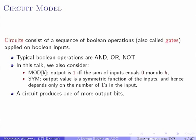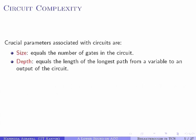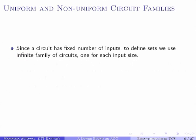The circuit produces some output bits which is the output of the circuit. We have the notion of circuit complexity, determined by certain parameters. The most important is size, which is the number of gates. The second is depth, which is the length of the largest path from an input to an output. The circuit complexity of a Boolean function is the size of the smallest circuit computing it.